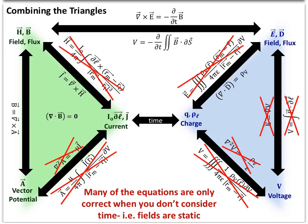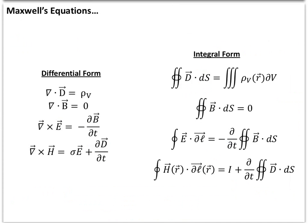I'd like to remind you that we're not in electrostatics anymore. A lot of the equations we derived aren't valid when the electric and magnetic fields change in time. Essentially what we do is get rid of most of those equations and end up with four equations known as Maxwell's equations. Maxwell originally had 12 equations when he first derived these, but they got reduced down to four over time as he figured out redundancies. These equations come in two forms: differential forms and integral forms.